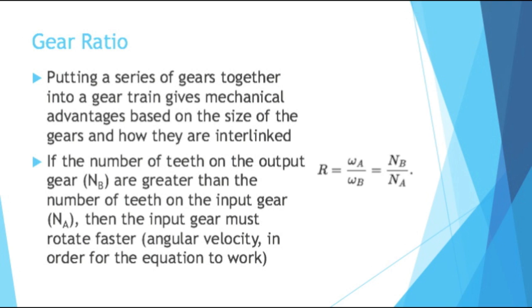What that means is, if the number of teeth on the output gear B are greater than the number of teeth on the input gear A, then the input gear must be moving faster — rotating faster in angular velocity than gear B. If you imagine a tiny little gear turning a big gear, if the tiny one has fewer teeth but they're interlocked and moving at the same speed, the smaller one has to be rotating quicker.